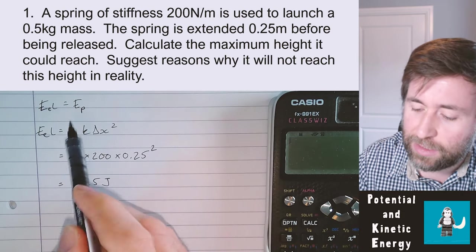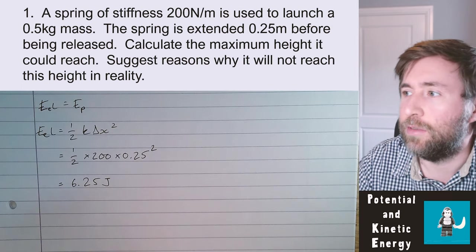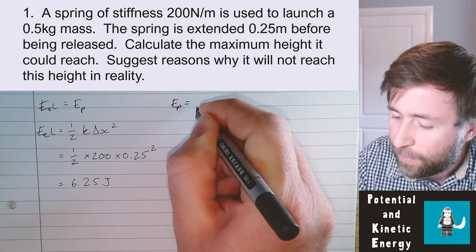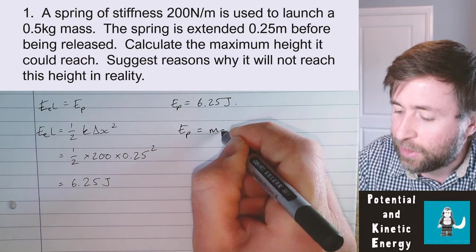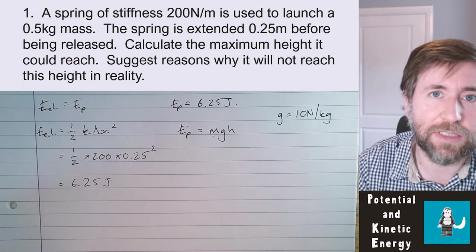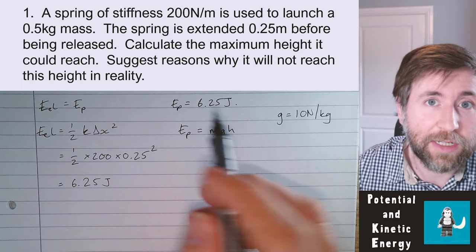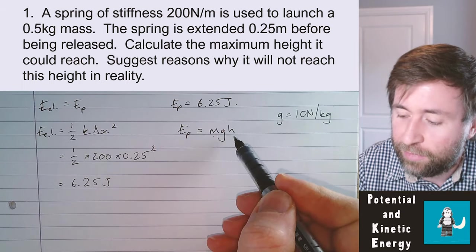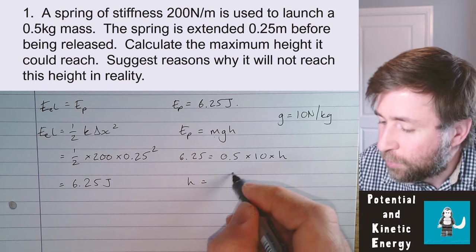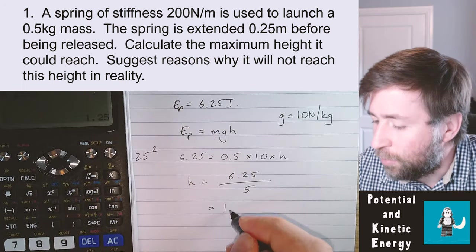We've transferred all of that energy into the potential energy store — 6.25 joules. GPE = mgh, so 6.25 = 0.5 × 10 × h. Rearranging: h = 6.25 ÷ 5 = 1.25 meters. The question asks for the maximum height the pellet could possibly reach.